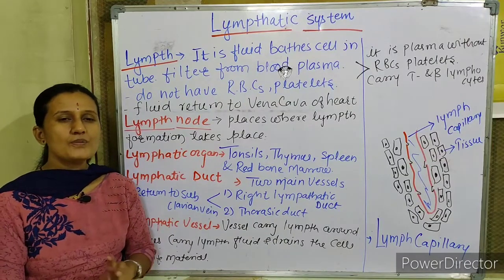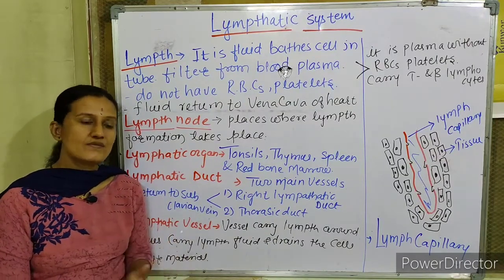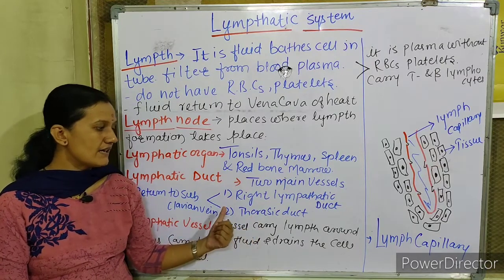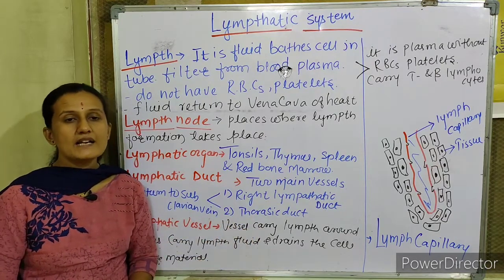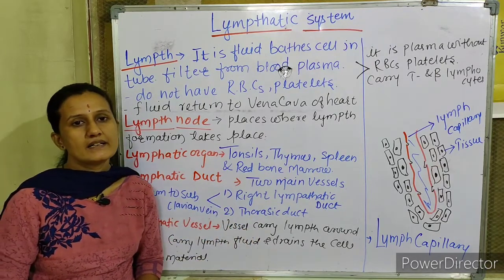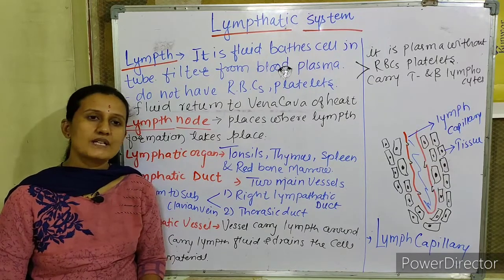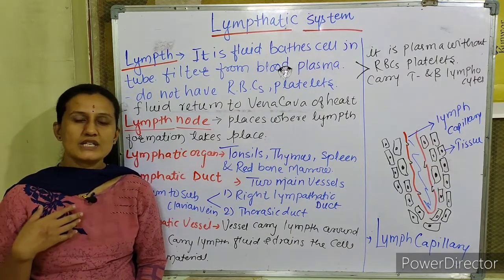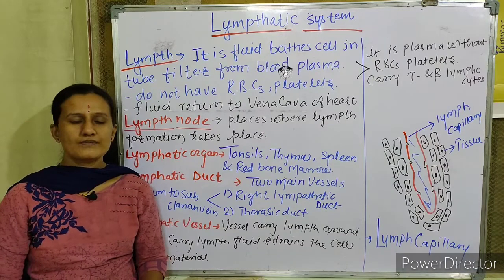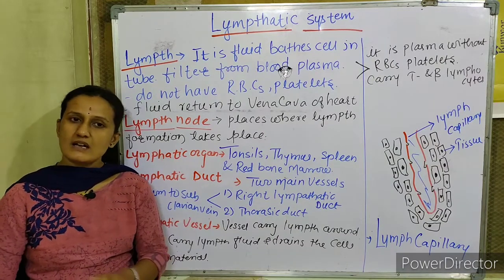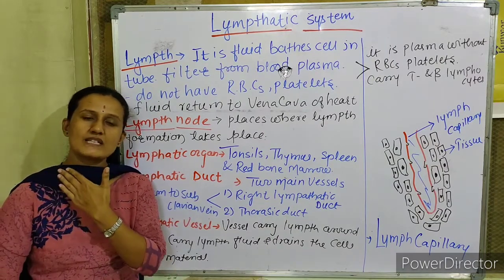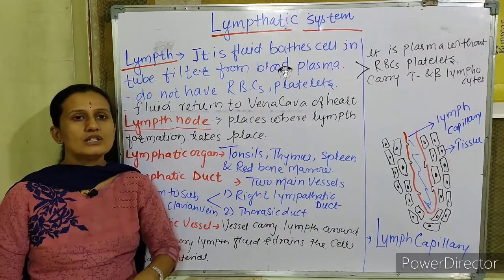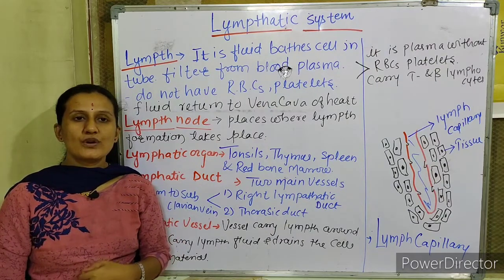There are two main lymphatic ducts which carry this fluid: the right lymphatic duct and the thoracic duct. The right lymphatic duct carries drainage and waste material from the right arm, right thoracic region, right neck, and right head side — the total upper right part of the body.